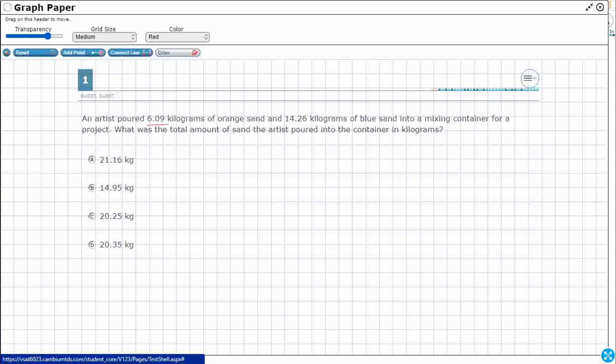So these are my two numbers, 6.09 or 6 and 9 hundredths kilograms of orange sand, 14 and 26 hundredths of blue sand, total amount.